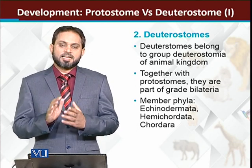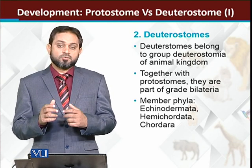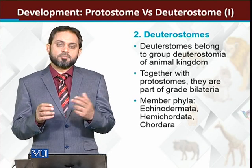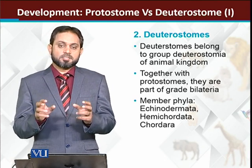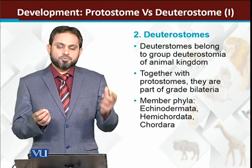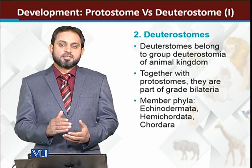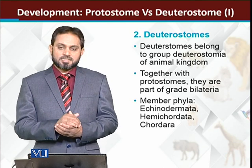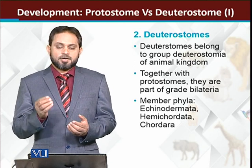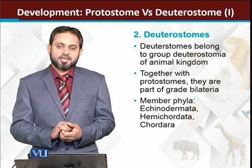Deuterostomes are the animals in which the blastopore is actually developed into the anus, while the mouth is developed from some secondary position. اس لیے ہم انہیں deuterostomes کہتے ہیں — deuter means second, stome means mouth. Deuterostomes ایسا group ہے جس میں development کے دوران جو blastopore ہے وہ mouth میں convert نہیں ہوتا بلکہ mouth کسی secondary position پر emerge ہوتا ہے. The three representative phyla of deuterostomes are echinodermata, hemichordata, and chordates.